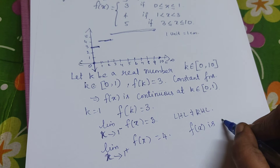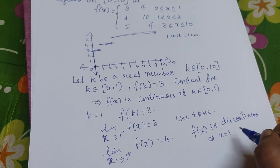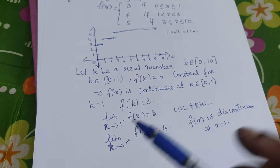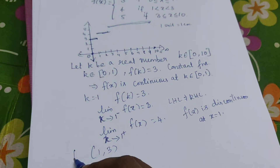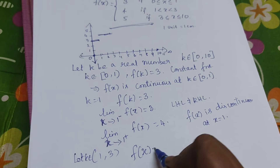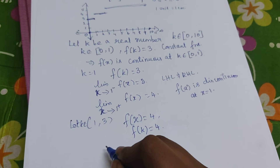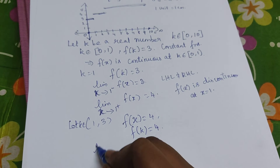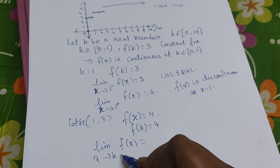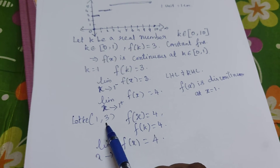Now we consider the open interval (1, 3). Let k belong to this open interval. Here the function is f(k) = 4. When we calculate the limit as x tends to k of f(x), it is independent of x, so the limit is 4. Therefore, the function is continuous for all k in the open interval (1, 3).